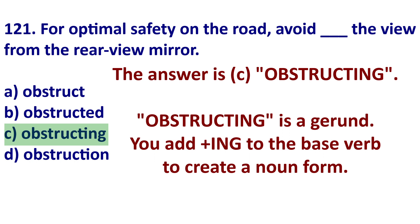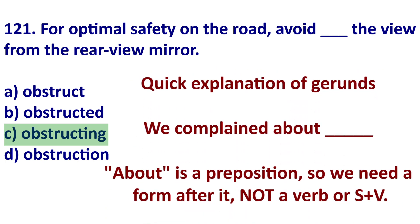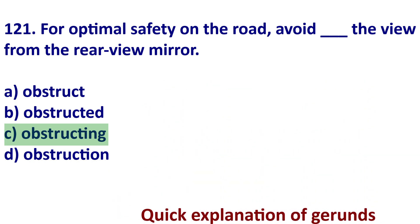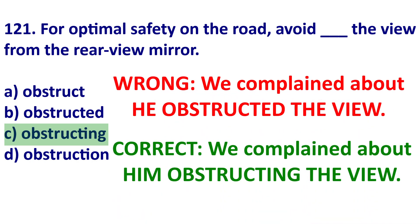A gerund is adding -ing to a base verb so it becomes a noun form. For example, 'we complained about' — 'about' is a preposition, so we need a noun form after it. It would be wrong to say 'we complained about he obstructed the view.' It is correct to say 'we complained about him obstructing the view' because 'obstructing' is a gerund noun that takes the object 'the view.' So once again, the answer is C.